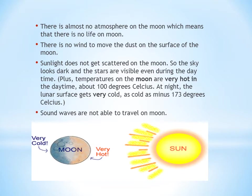Sunlight does not get scattered on the moon. There are gases in the atmosphere — atoms and molecules — and when sunlight falls on them, it is scattered, creating colors like the blue sky or a pink hue in the evening. But on the moon, you would see a completely dark sky even during daytime when sunlight is falling on the moon, and stars are even visible during the daytime.